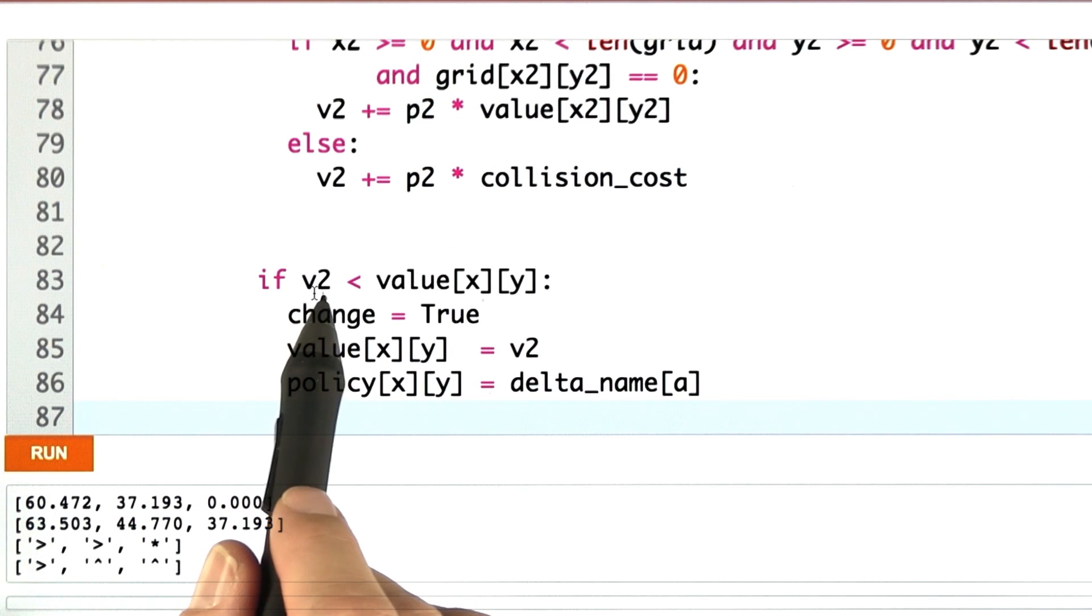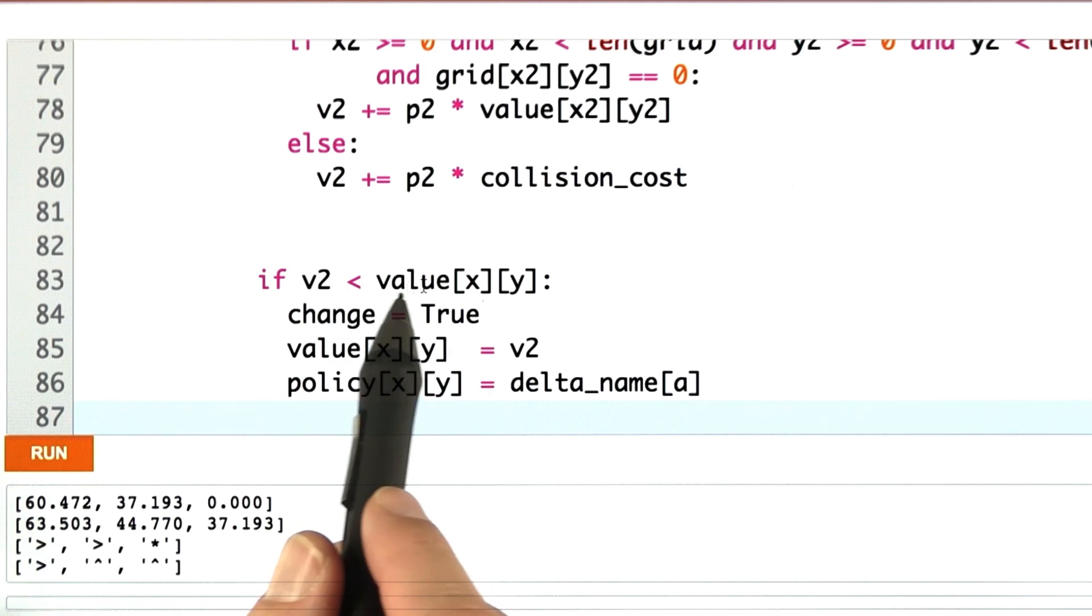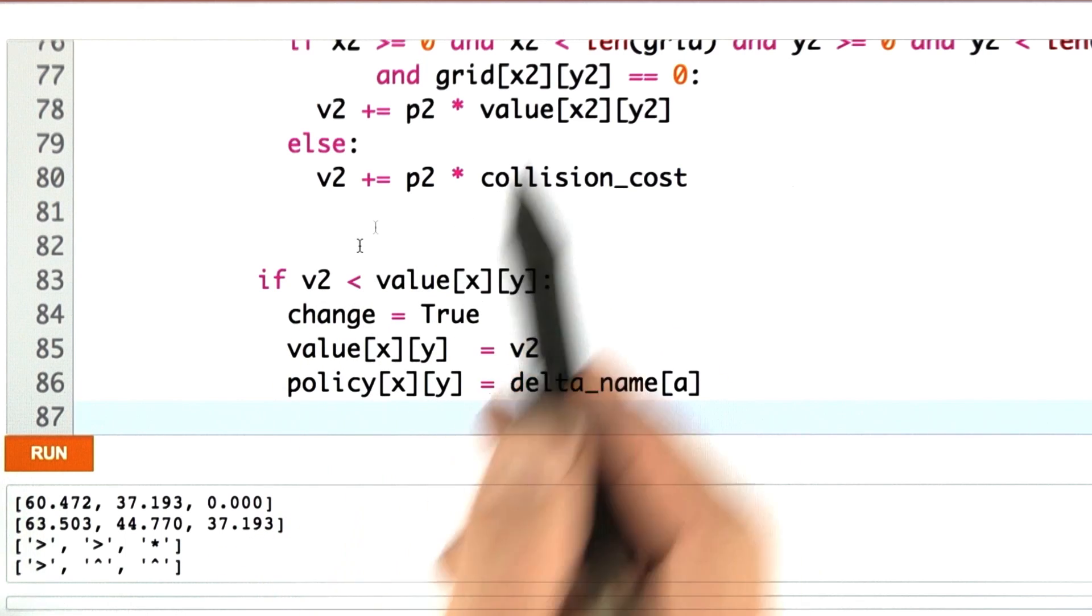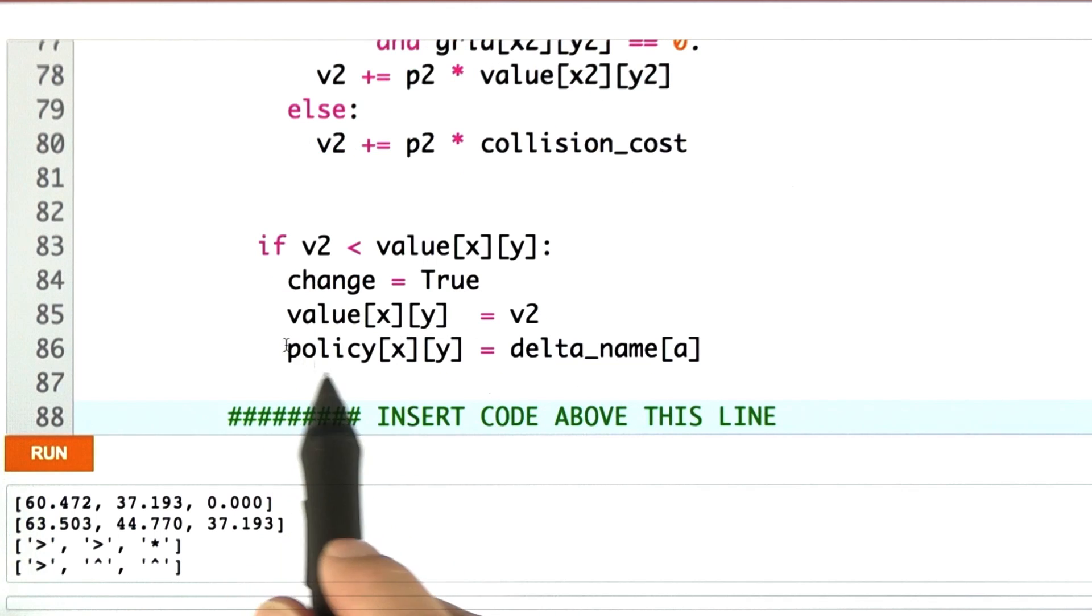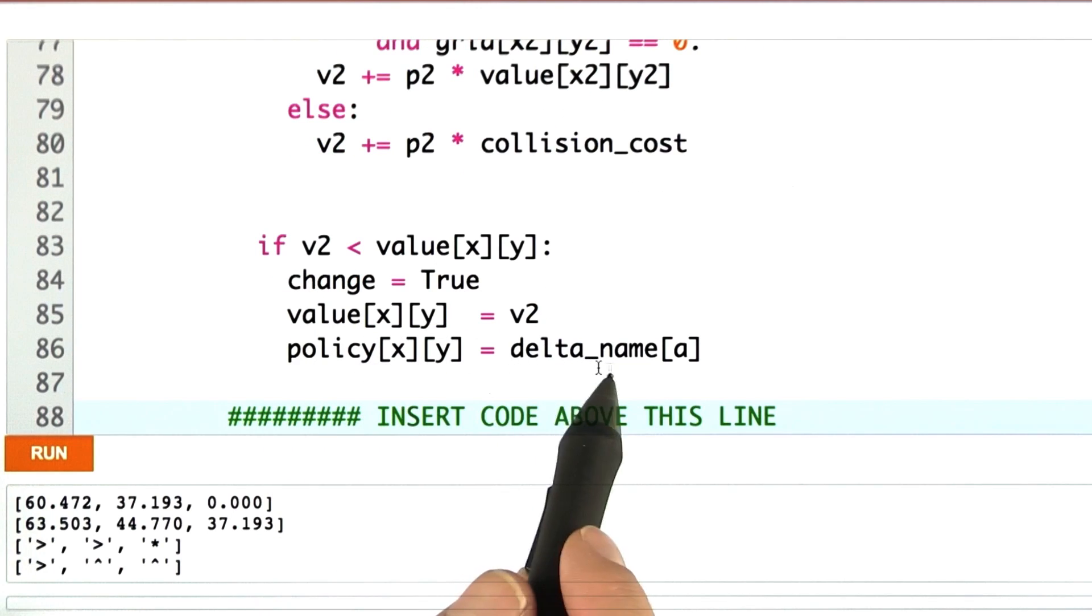Finally, I take my cumulative value of v2, which I initialized with the cost of motion. You can't see this right here, but it's further up. And I update my value function just like before. You can see this in the code over here.